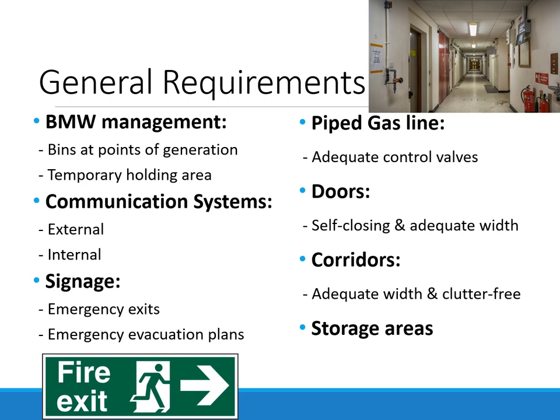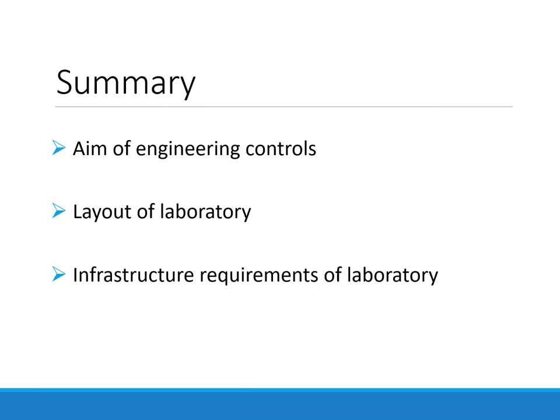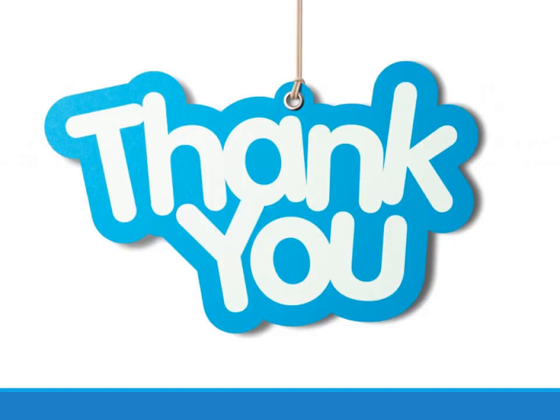To summarize: we looked at the aim of engineering controls, which is to provide a safe, accessible environment for laboratory personnel to conduct their work. We looked at the layout of a laboratory, divided into a specimen collection area, the main laboratory area, and general laboratory area, each further broken down. The infrastructure requirements included water supply, power supply, ventilation, temperature control, noise control, workbenches, communication systems, signages, doors, and corridors.